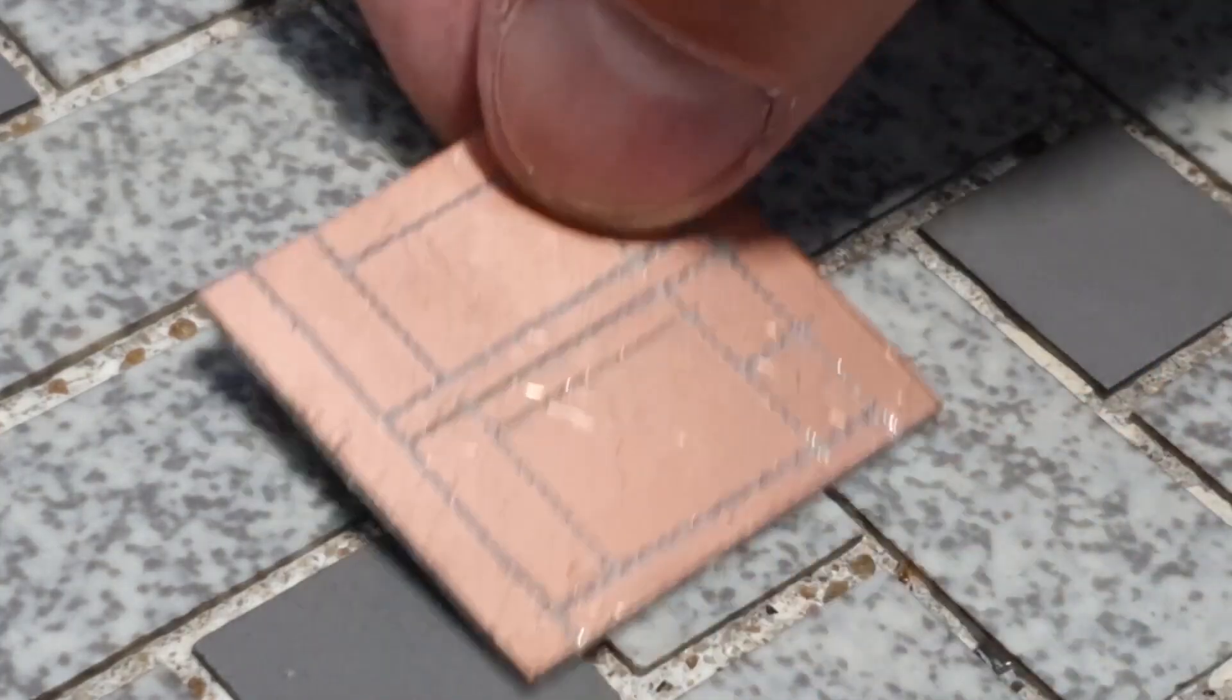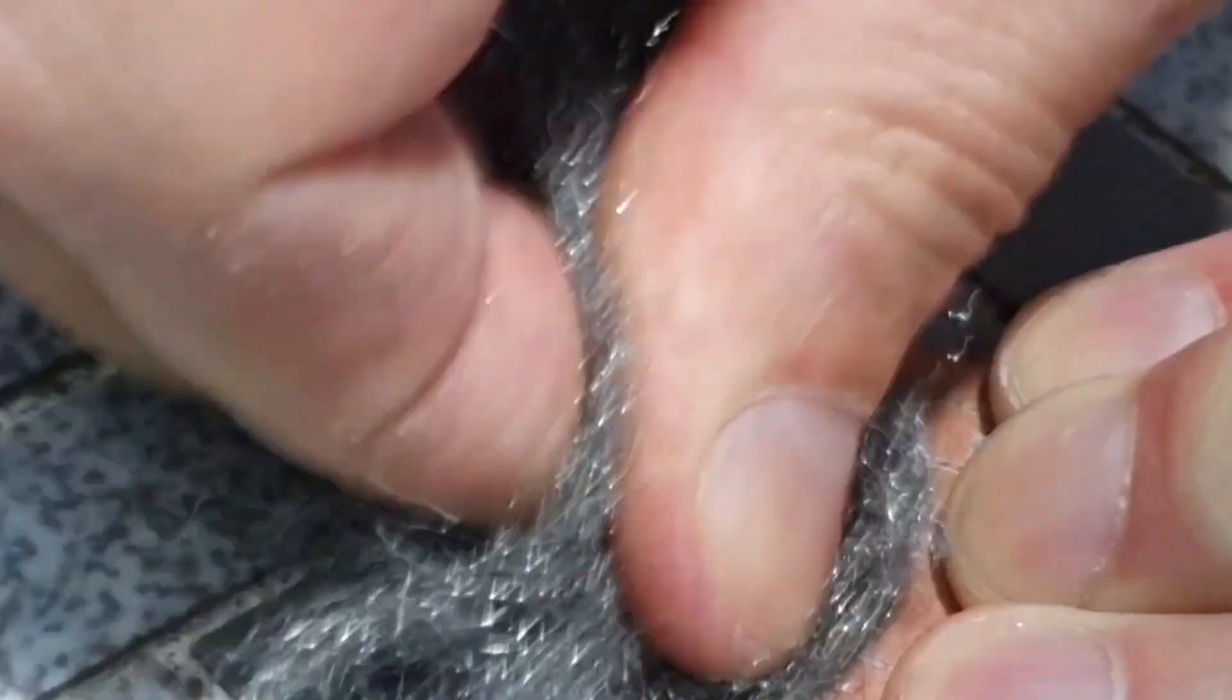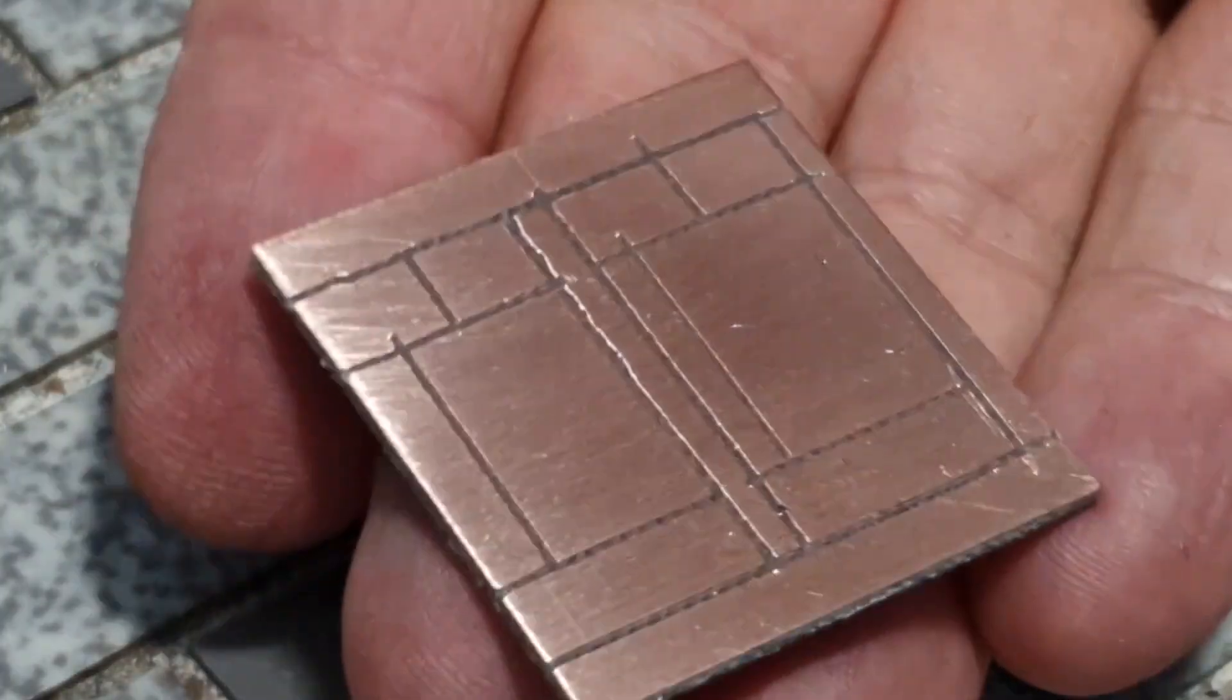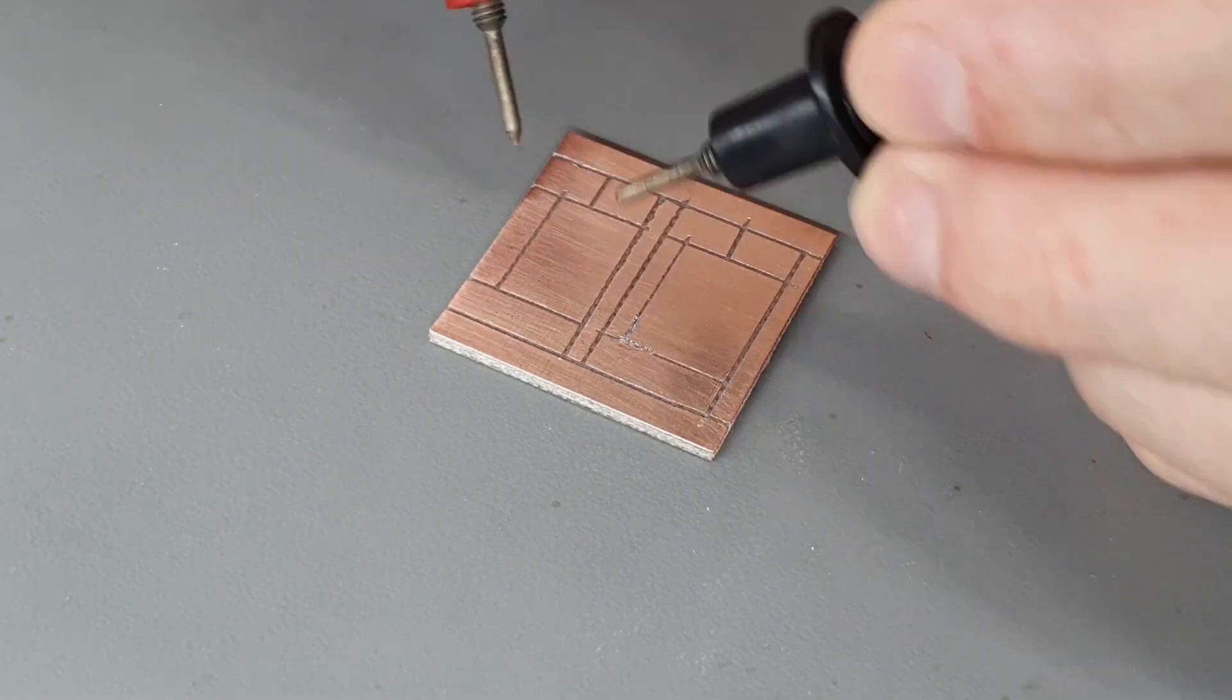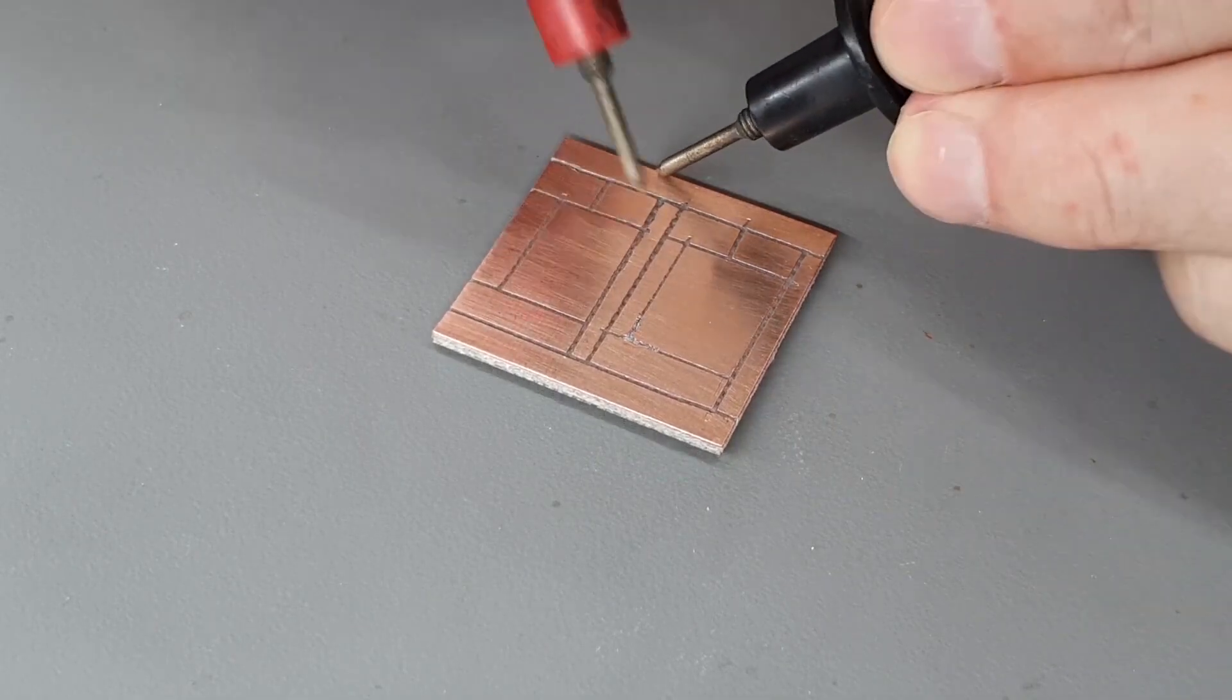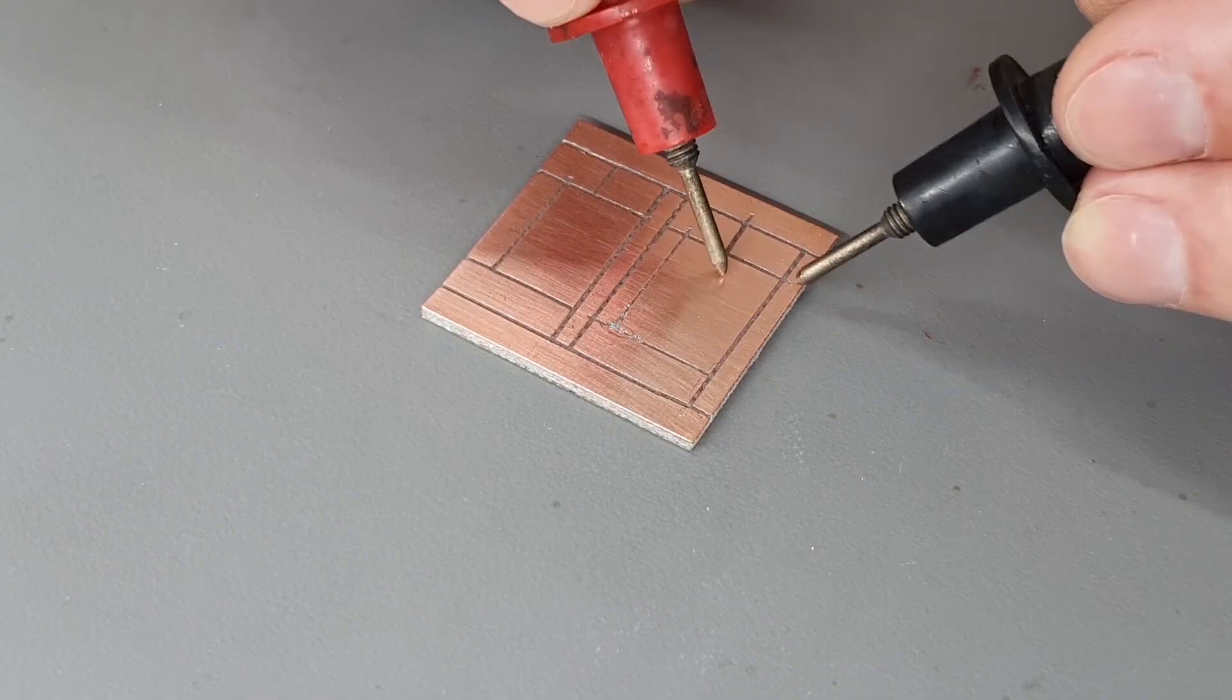Use steel wool to bring the copper to a shine. Scrub the board in two directions. This helps remove any tiny copper hairs that could short the board. Before you solder any parts on, thoroughly check every island for shorts. This is critical. You don't want to find a short after soldering parts onto the board.